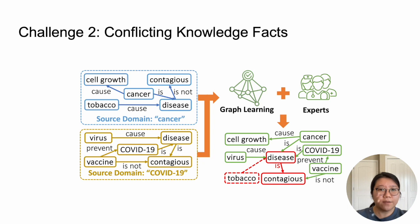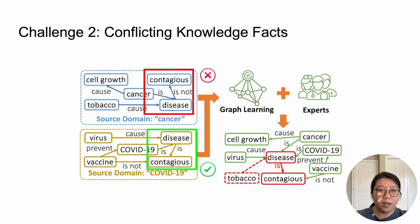The second challenge lies in conflicting knowledge facts. An intuitive solution to emergent health misinformation detection is to directly utilize knowledge facts from source domains to complement the limited knowledge in the target domain. However, a fundamental challenge is that knowledge facts from different source domains may conflict with each other given the domain-specific context. For example, the knowledge fact 'disease is not contagious' is correct in the domain of cancer, but incorrect in the domain of COVID. Such conflicts need to be correctly resolved in order to detect misinformation in the target domain.